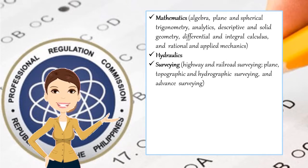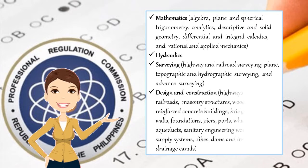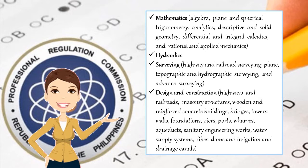Surveying, including highway and railroad surveying, plane, topographic, and hydrographic surveying, and advanced surveying. Design and construction of highways and railroads, masonry structures, wooden and reinforced concrete buildings, bridges, towers, walls, foundations, piers, ports, wharves, aqueducts, sanitary engineering works, water supply systems, dikes, dams, and irrigation and drainage canals.